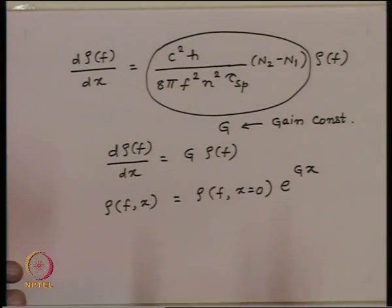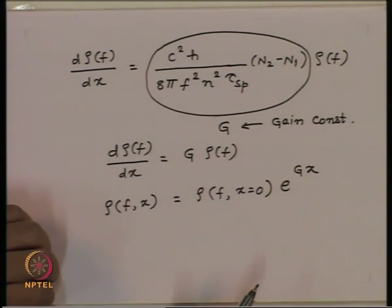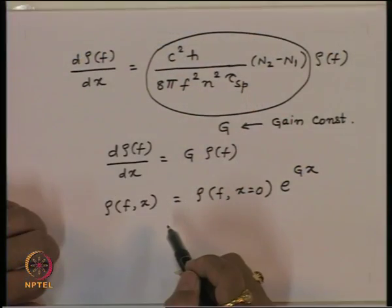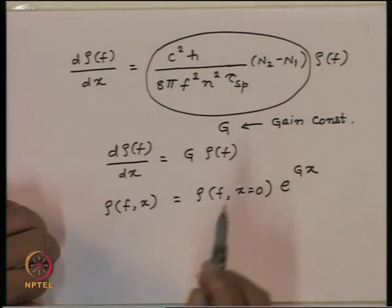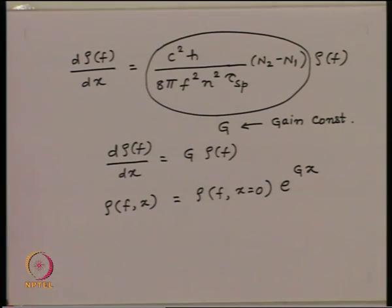The quantity N2 minus N1 is exactly the same as the product of the electron density in the conduction band and the hole density in the valence band. We have already seen that this quantity has a spectral distribution which is nothing but the LED emission. So N2 minus N1 has a spread in energy, and this is exactly the same as what we see for the LED. In other words, the gain has a shape similar to the LED spectrum.